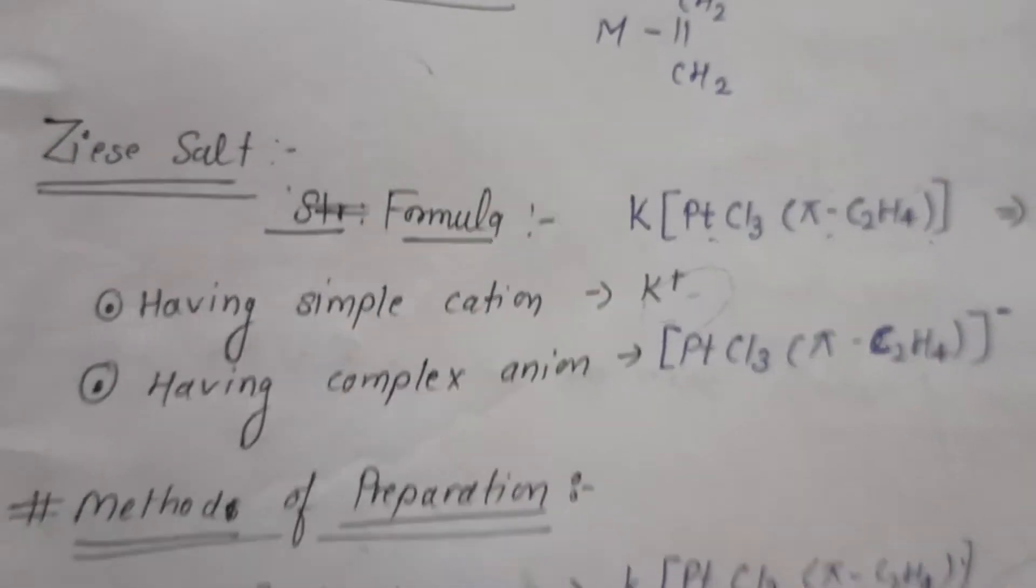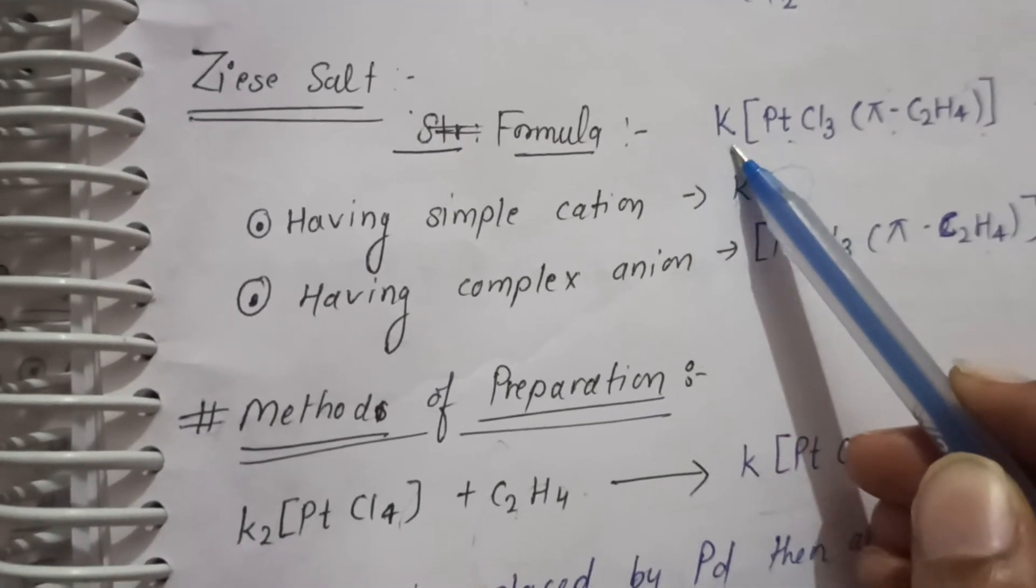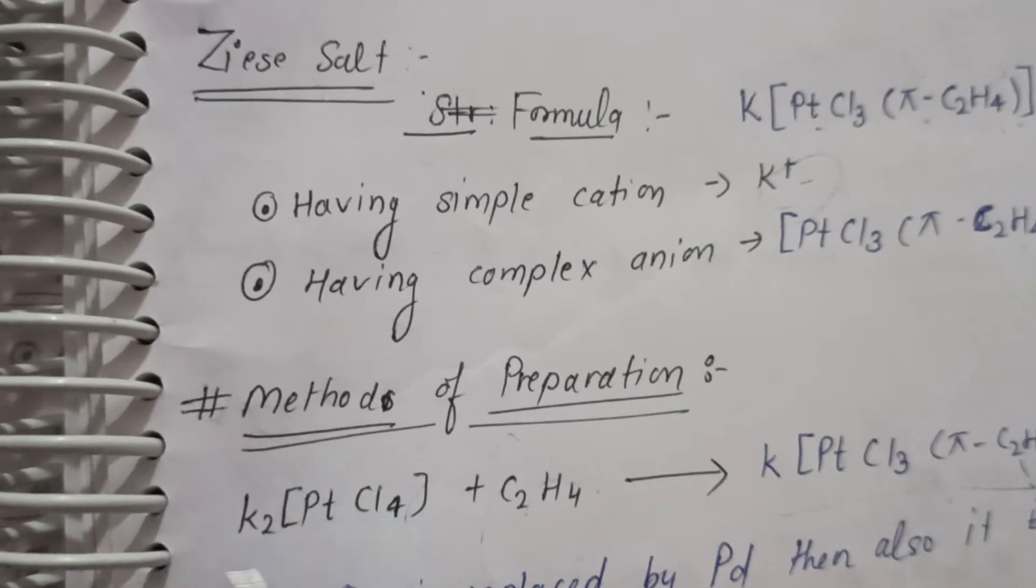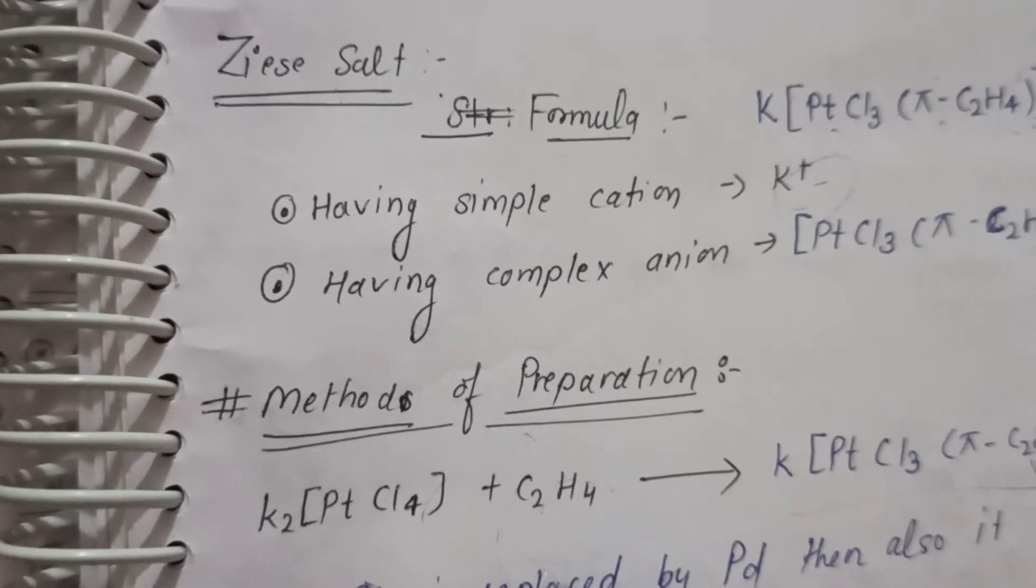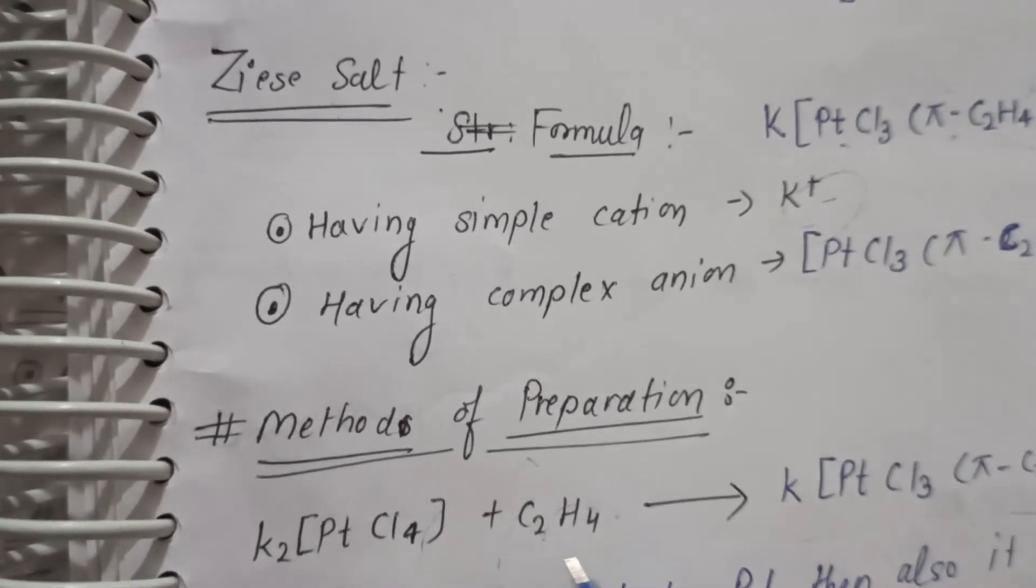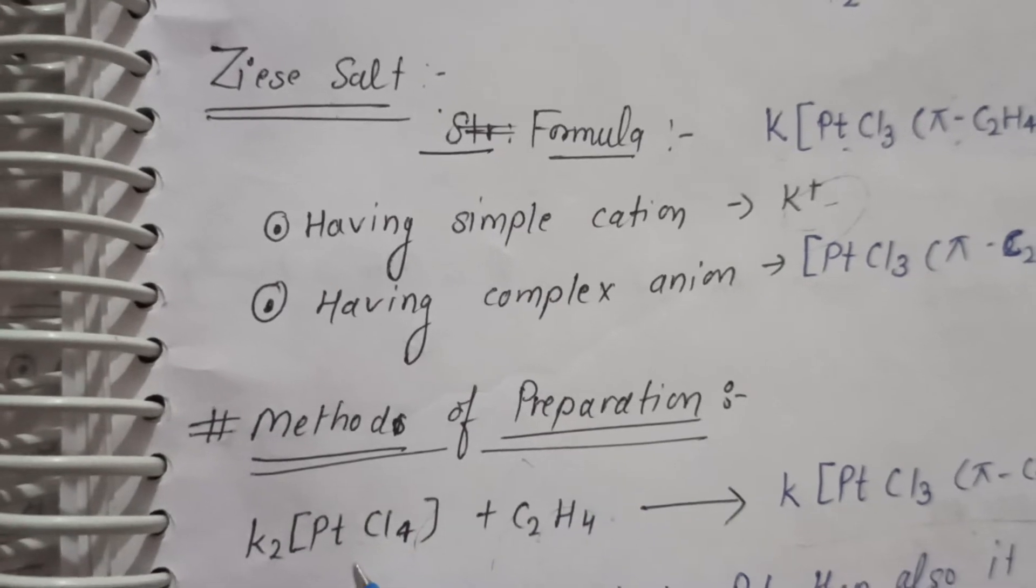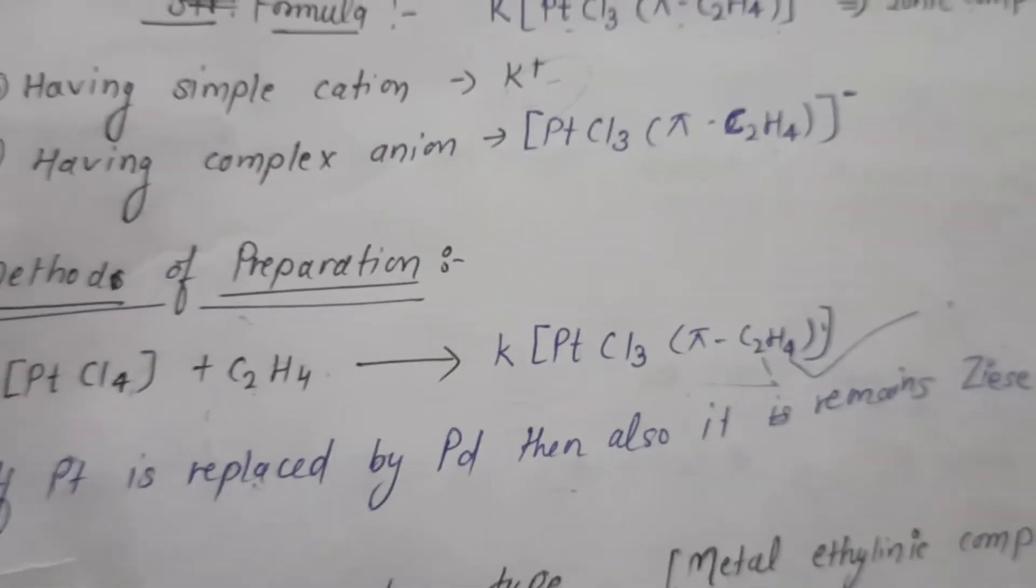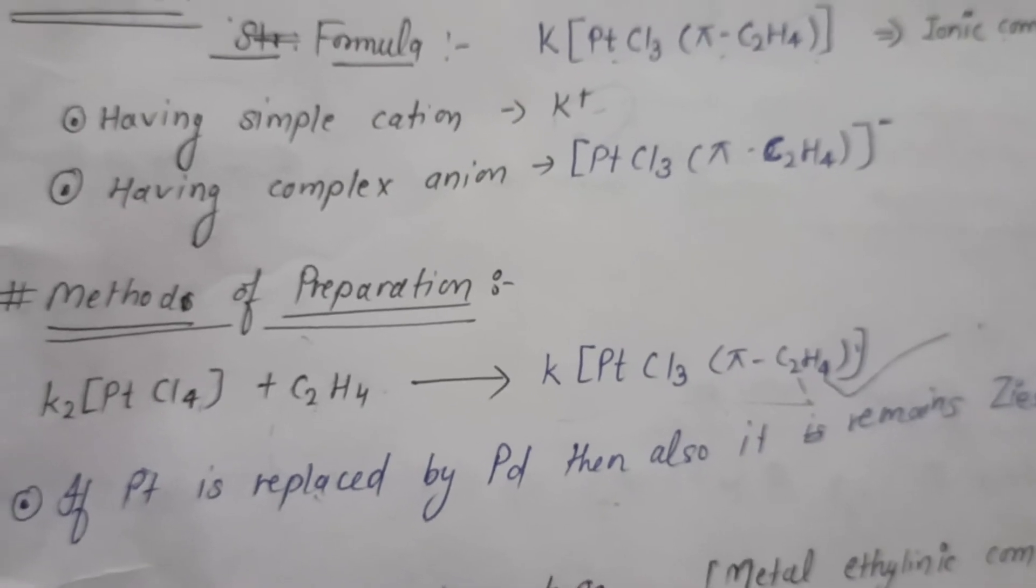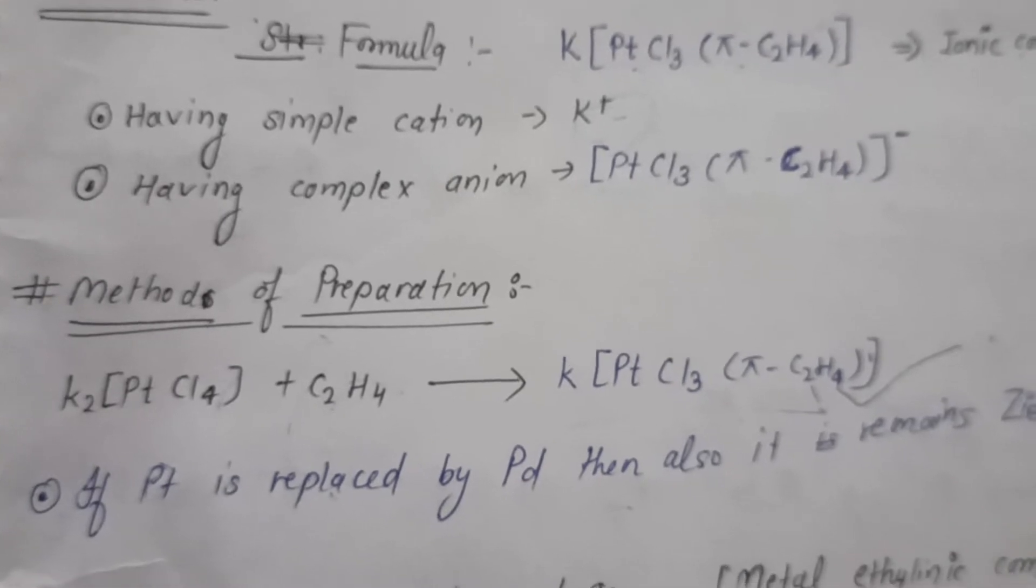Next step is the method of preparation. How do we prepare this? It is not much difficult. First of all, K2PtCl4. What did we do in this method? Ethene. After adding ethene, 1 KCl comes out and the other compound will become our product. I really hope you all are clear.